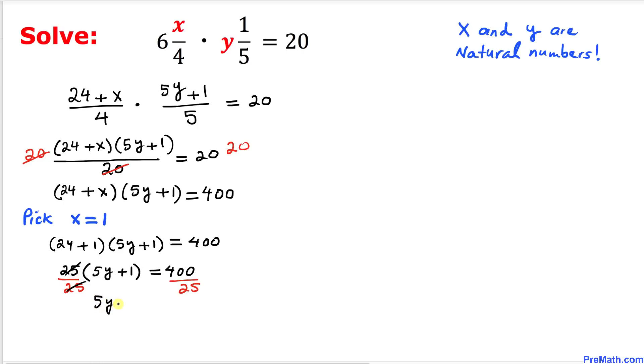So we are going to get this 25 and 25, this is gone. So we got 5y plus 1 equal to 16. Let's subtract 1 from both sides. This is gone, so we ended up with 5y equals to 15.